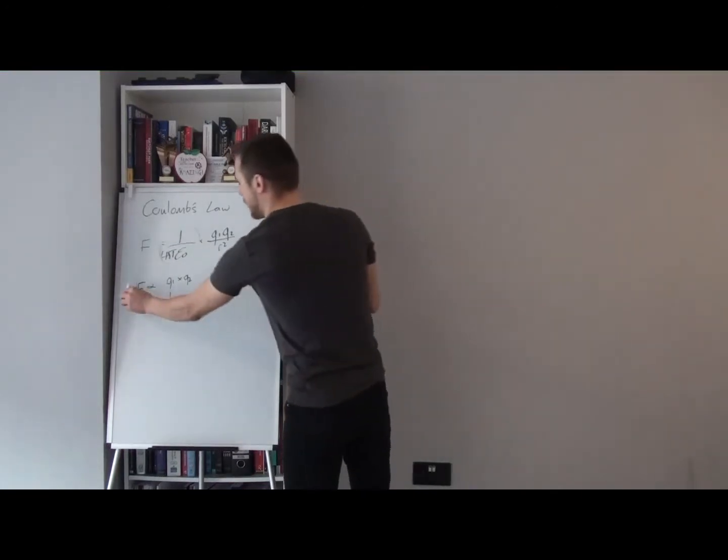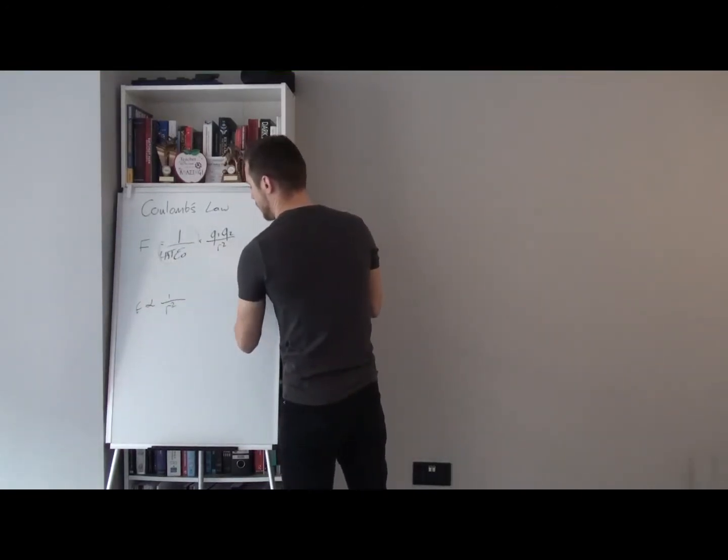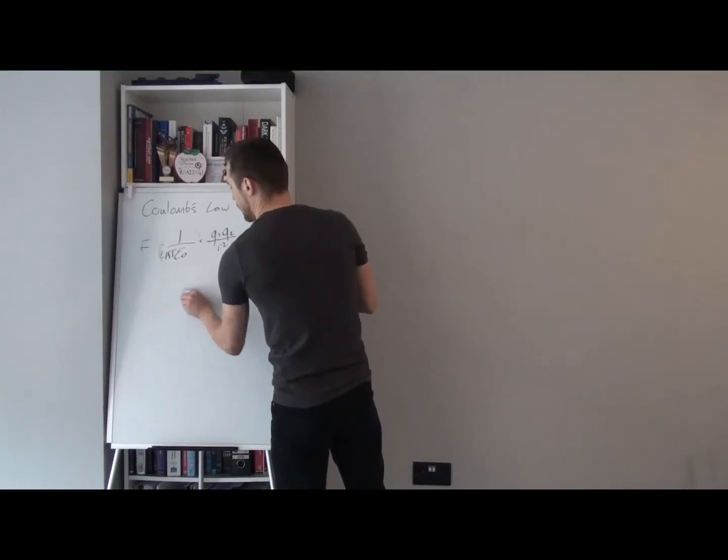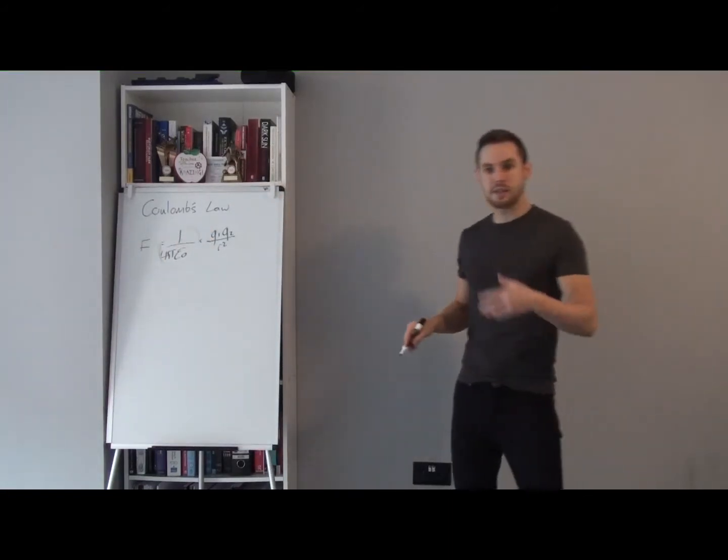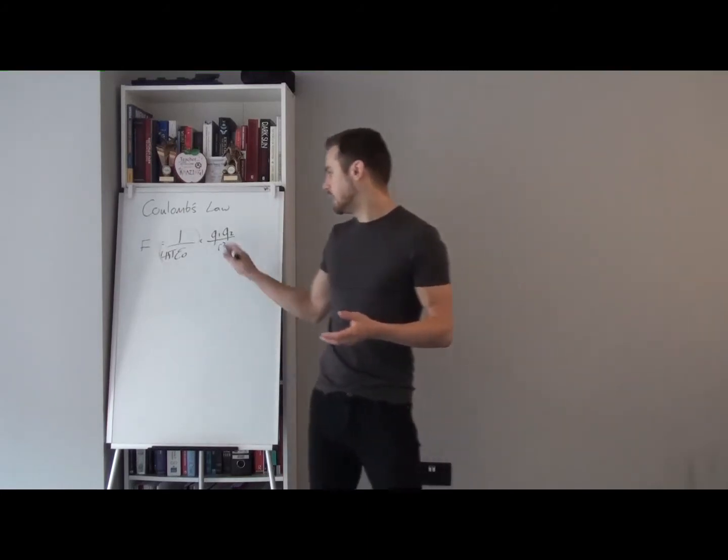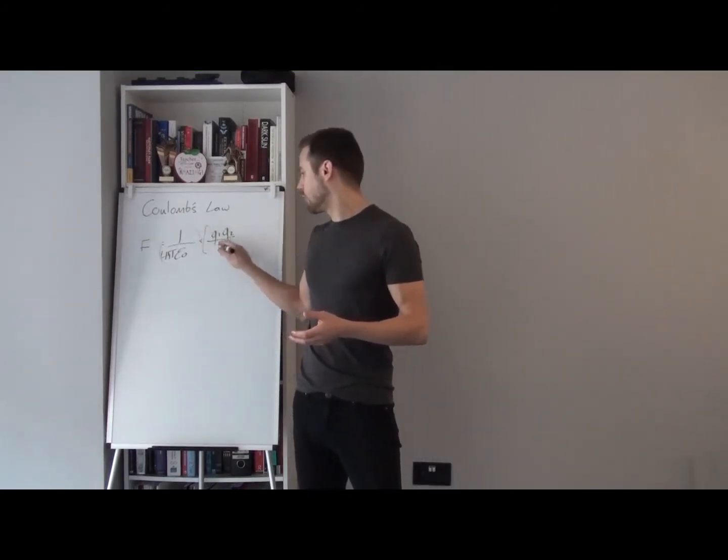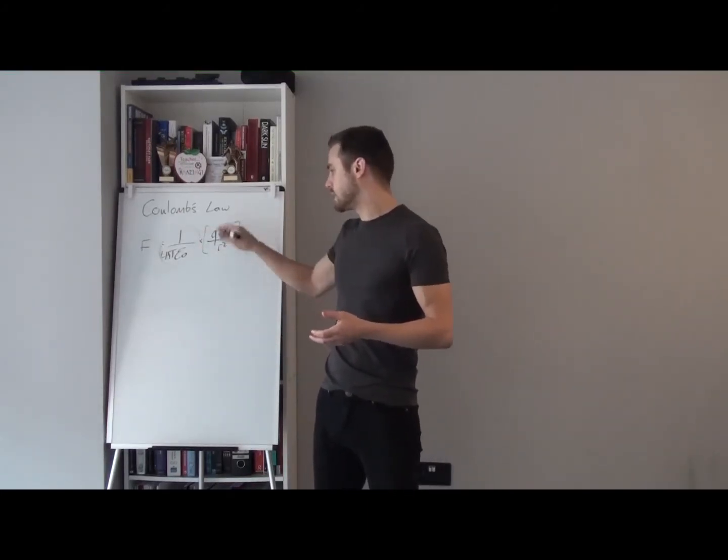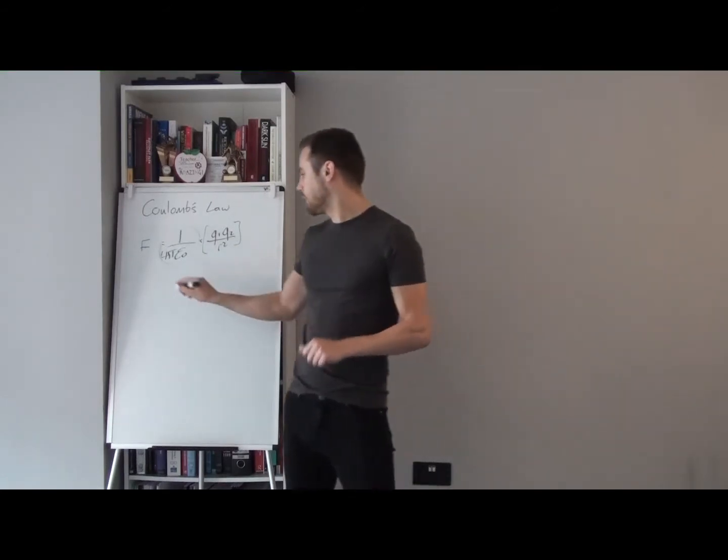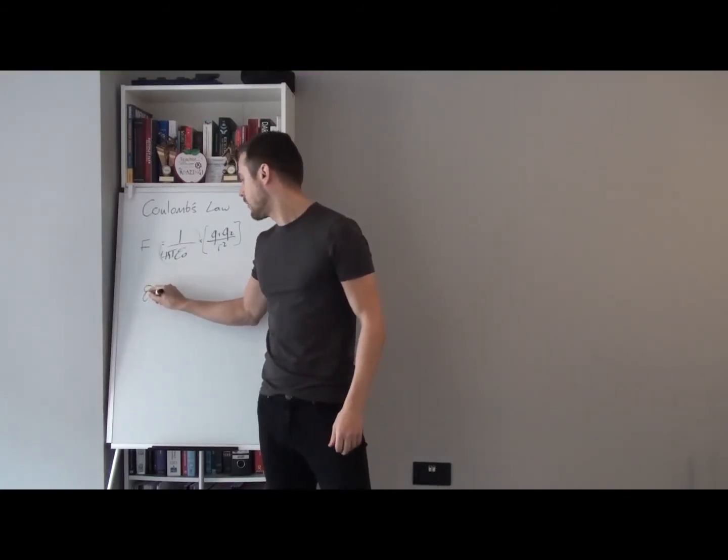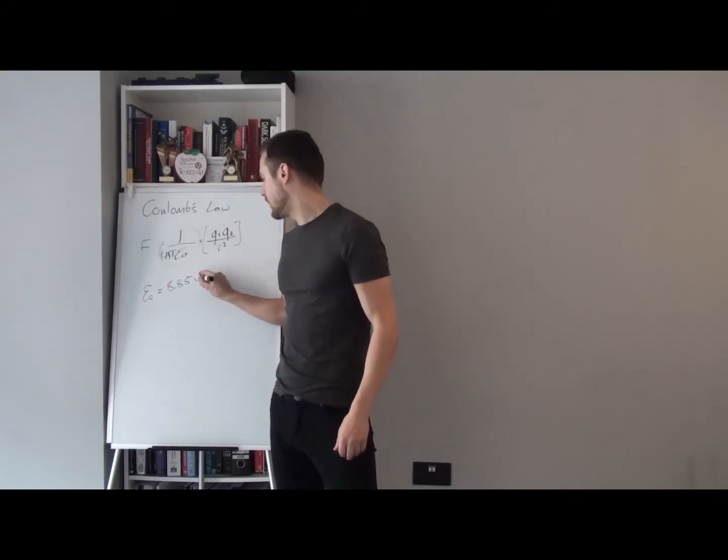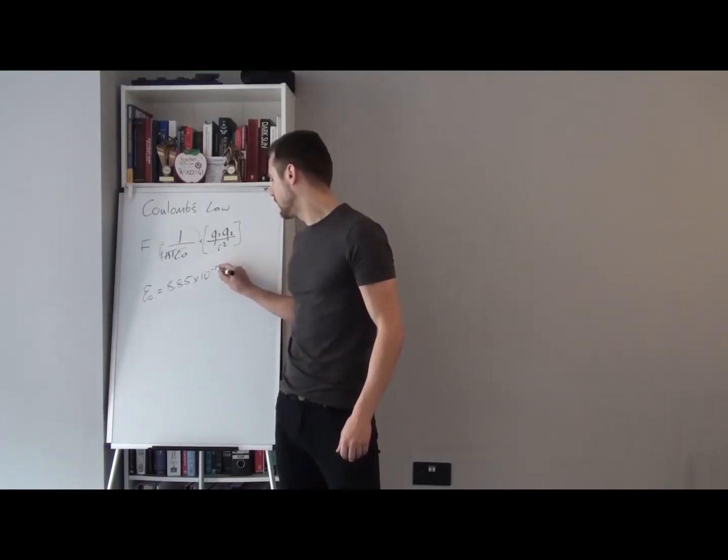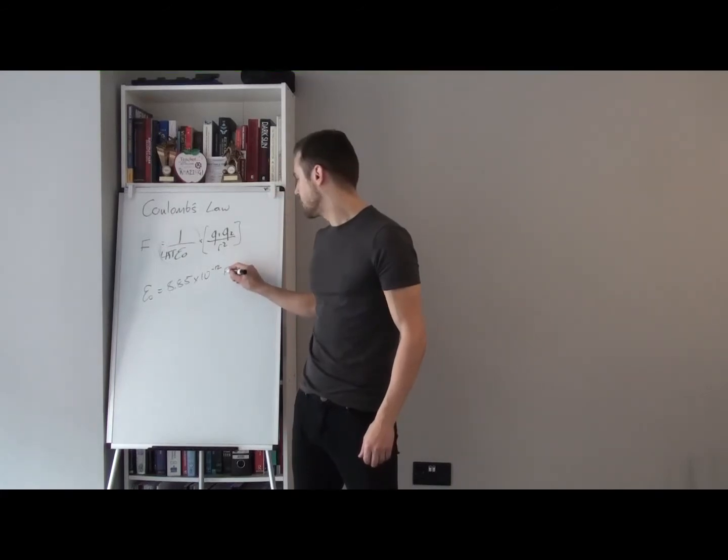Now, let's remove that and have a look at this quantity, epsilon naught. Now, this constant here, four pi epsilon zero, is essentially the constant of proportionality for these factors. Now, epsilon zero happens to be 8.85 times 10 to the minus 12 farads per meter.